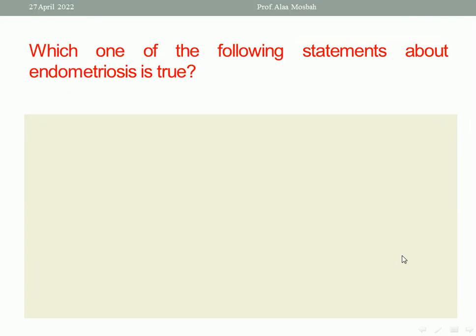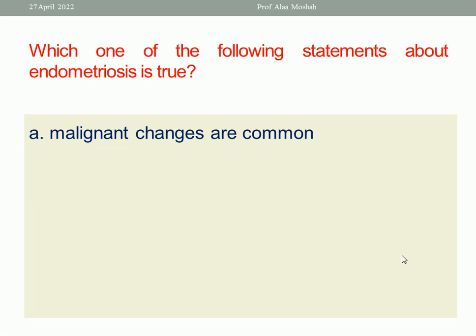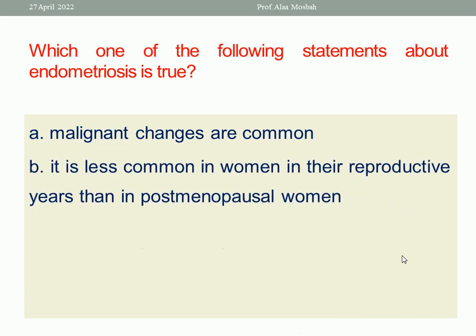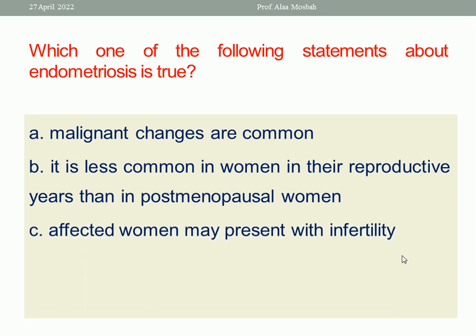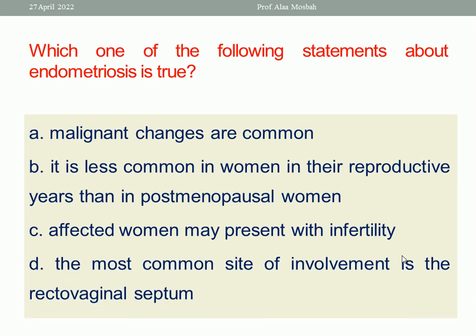Which one of the following statements about endometriosis is true? A. Malignant changes are common. B. It is less common in women in their reproductive years than in postmenopausal women. C. Affected women may present with infertility. D. The most common site of involvement is rectovaginal symptoms.